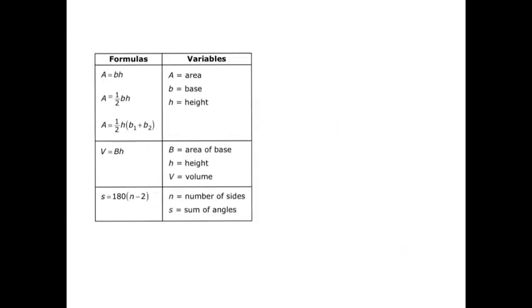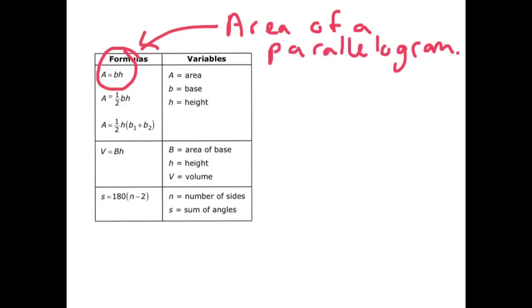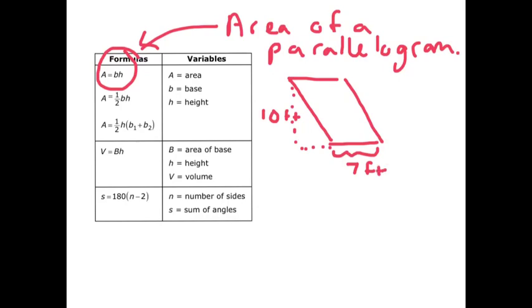When you take a test, they might give you a formula sheet. If you look at this formula sheet, you will see that it has area equals base times height — that is the rule, the formula for finding the area of a parallelogram. So if they give you a parallelogram on your test like this one and say it's 10 feet tall and 7 feet wide at the base, then the area equals base times height: 7 times 10, or 70 feet squared.